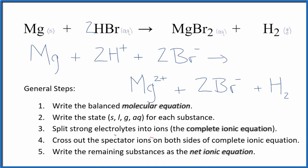Now we can cross out spectator ions. They'll be on both sides of the complete ionic equation. In the reactants, I have two bromide ions. In the products, I also have two bromide ions. So these are spectator ions. Let's cross those out.